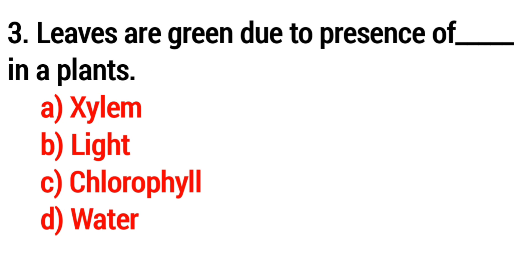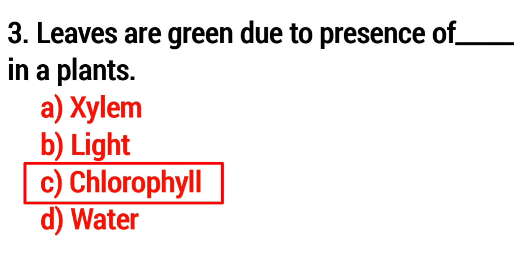Question 3. Leaves are green due to the presence of which substance in a plant? Option C: Chlorophyll. The answer is Chlorophyll.